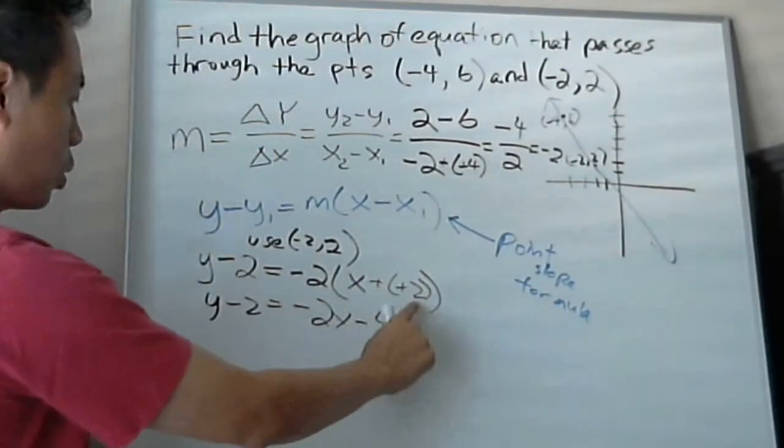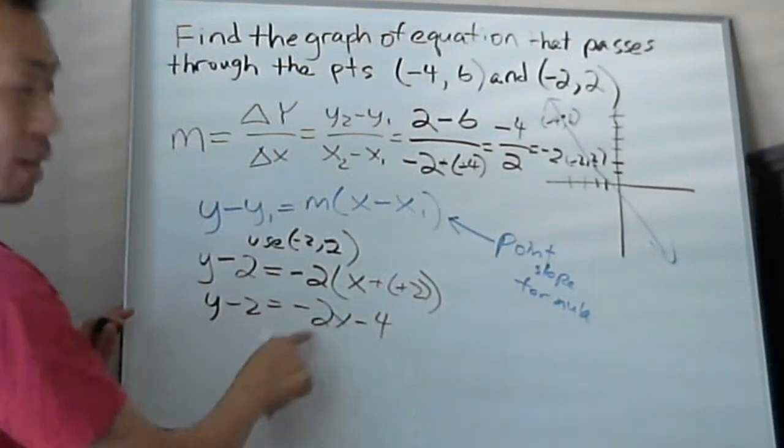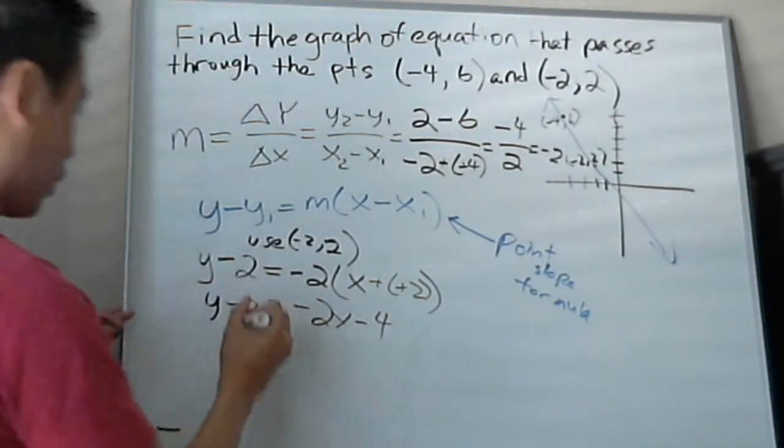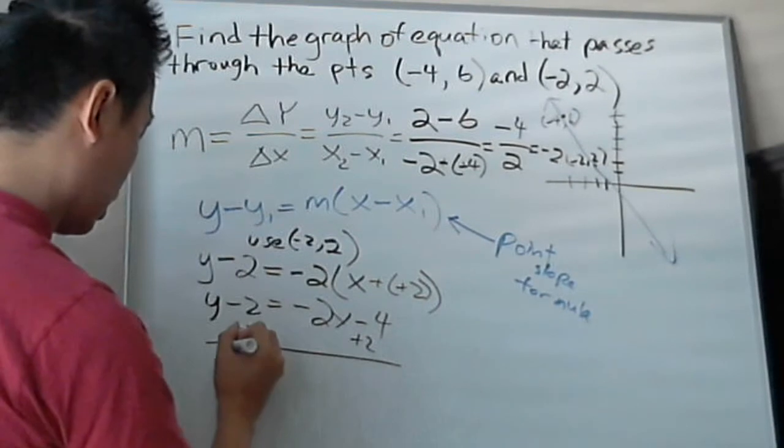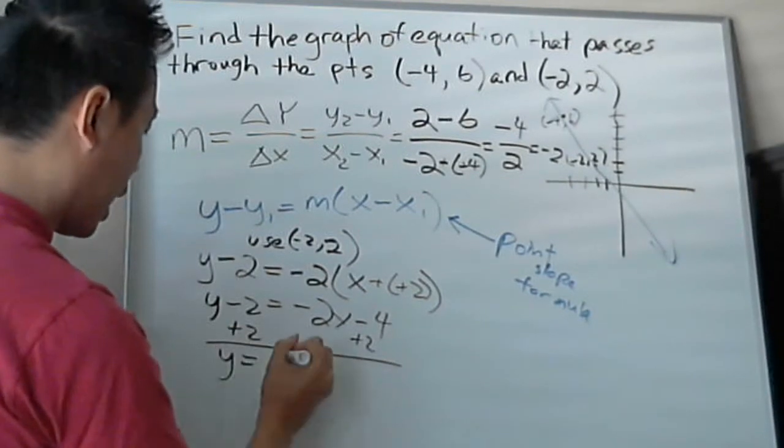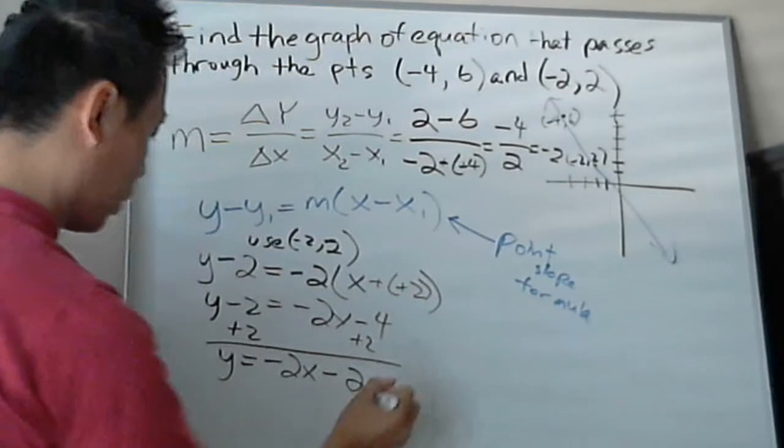Negative 2 times 2 will be negative 4. Negative 2 times x is negative 2x. And then now you got this. So let's add 2 on both sides. So now you got y equals negative 2x minus 2.